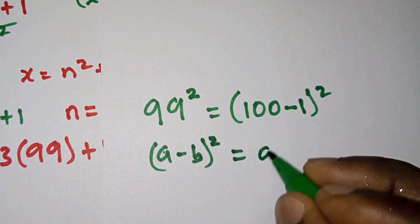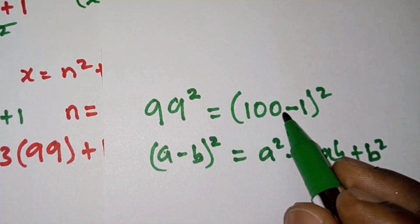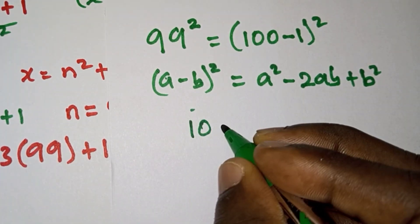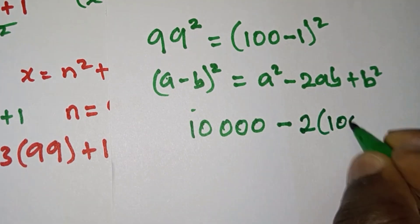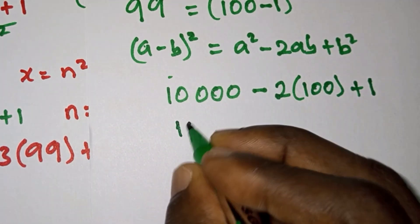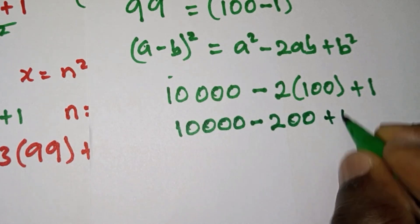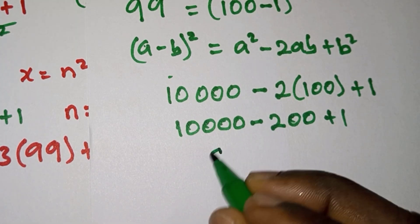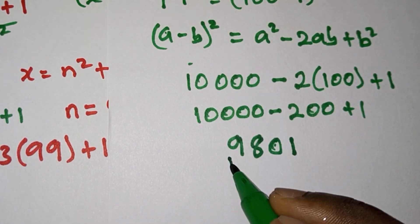So if we expand this based on this identity here, we're gonna have 100² which is 10,000, minus 2·100 plus 1. So we're gonna have 10,000 - 200, that is 9,800 plus 1, we're gonna have 9,801. So it means that 99² is giving us this one.